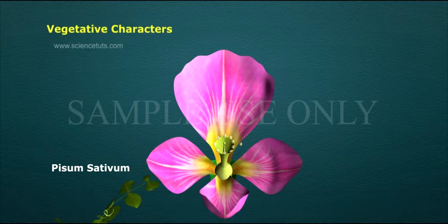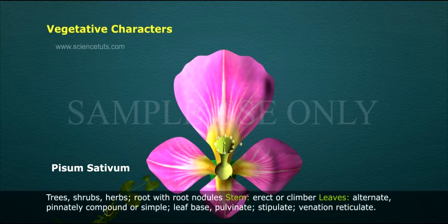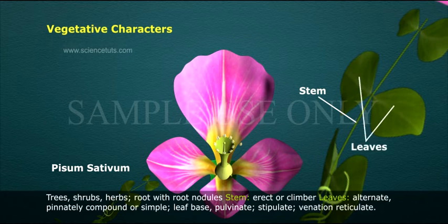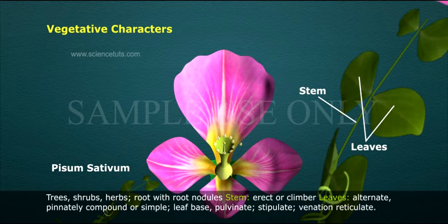Vegetative characters: Trees, shrubs, herbs. Root with nodules. Stem erect or climber. Leaves alternate, pinnately compound or simple. Leaf base pulvinate, stipulate. Venation reticulate.